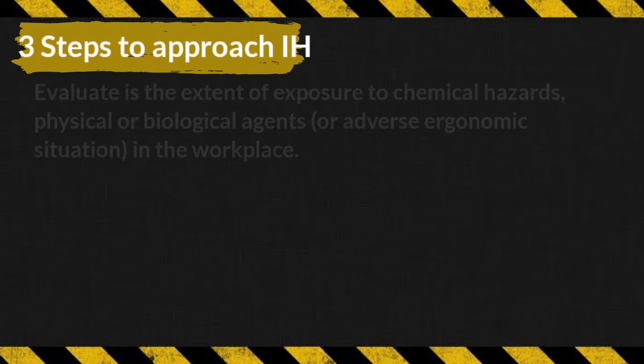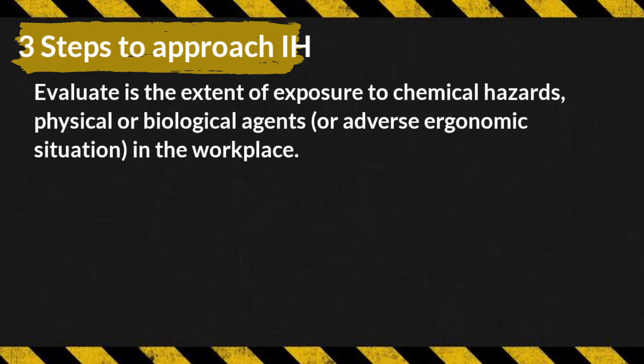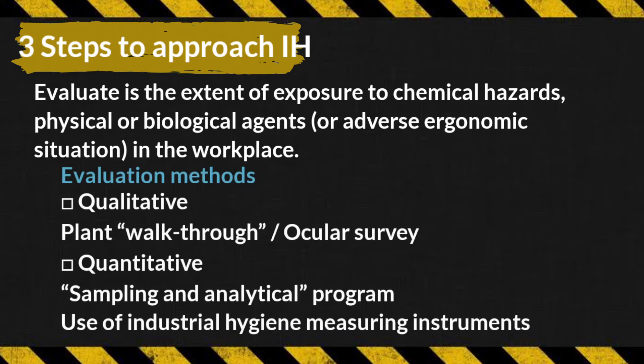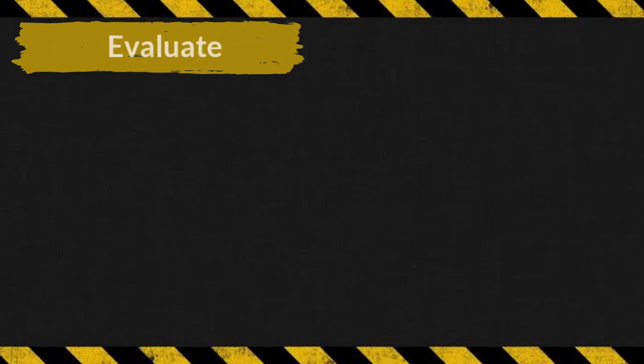The second step to approach industrial hygiene is evaluate — assessing the extent of exposure to chemical, physical, or biological agents in the workplace. Evaluation methods include qualitative methods such as plant walkthrough or ocular survey, and quantitative methods such as sampling and analytical programs using industrial hygiene measuring instruments.